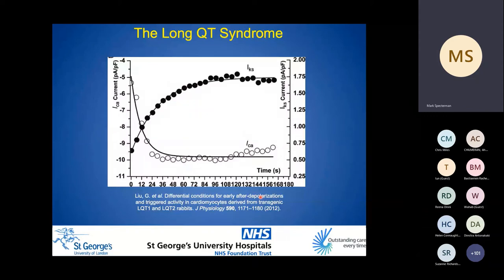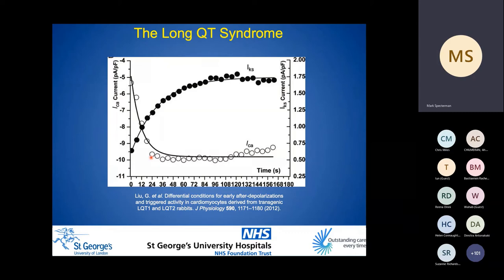IKr is the predominantly repolarizing current at rest. In a rabbit model, with continuous isoprenaline infusion, peak inward calcium current is augmented more quickly than IKs — inward current is depicted with negative magnitude by convention. Therefore, with surges of sympathetic drive such as abrupt standing or abrupt stressors like alarm clocks, IKr is required to counter the augmentation of calcium current. With IKr deficiency, arrhythmias in LQT2 classically happen under such circumstances.